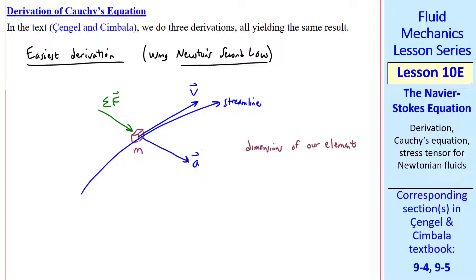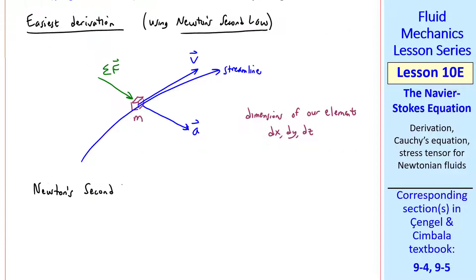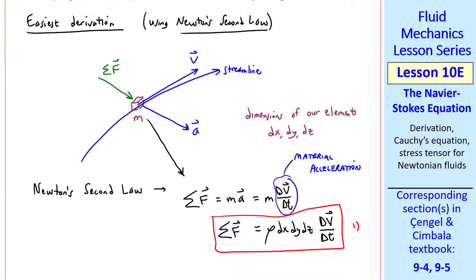The dimensions of our element are dx, dy, and dz. Newton's second law for this little fluid element is sigma f equal ma equal m dv dt, where this notation of capital dv dt is the material acceleration, which, as you should recall from a previous lesson, is the acceleration following a fluid particle. The mass is the density times the volume. So Newton's law is written like this, which we'll call equation 1, for our little fluid element.